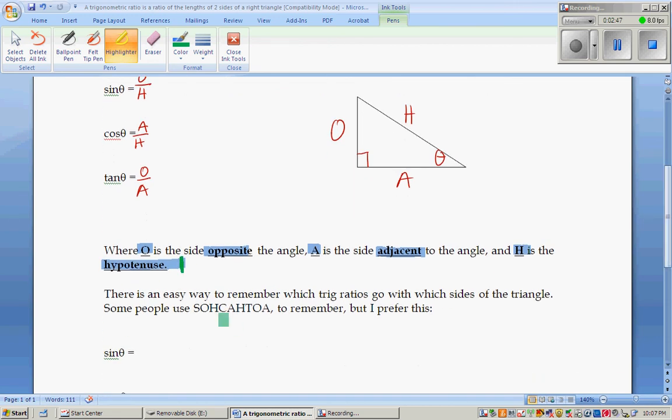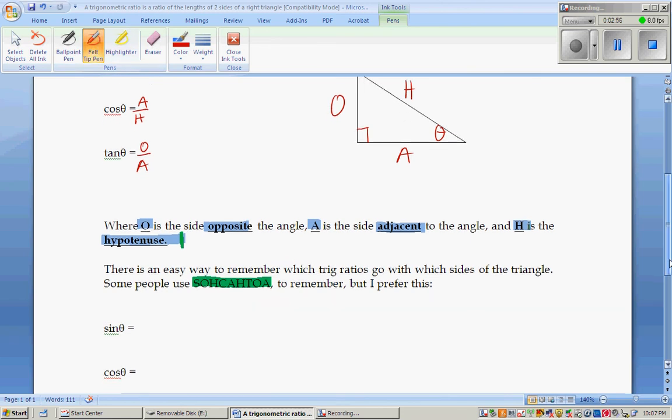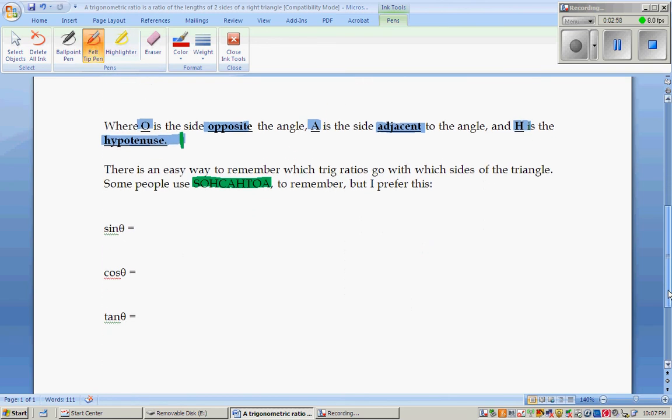Some of you know Sokotoa, and that's how you remember what sine is, what cosine is. That's great if you already know it. If you don't, we're going to use what I used as a child. O over H, A over H, and O over A.